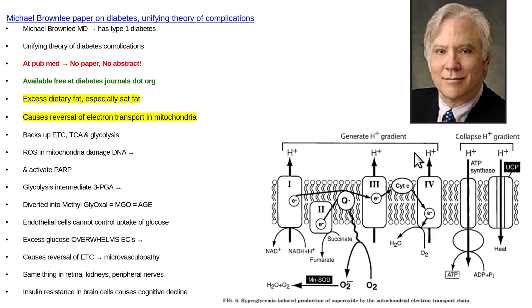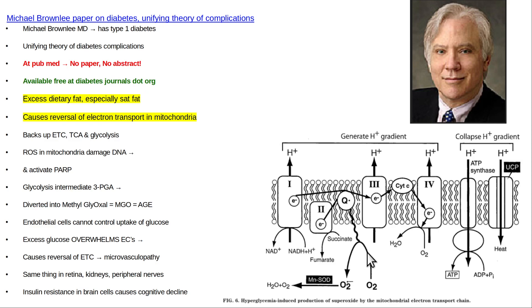The main finding was that excessive dietary fat will cause reversal of electron transport in mitochondria, like at complex 3. You'll get electrons being dropped off the electron transport chain — they'll drop onto oxygen and produce a superoxide. The point of all this is that the main cause of insulin resistance and diabetes is due to excessive dietary fat. So the smart thing to do for a type 2 diabetic is to eat a low-fat, plant-based diet.